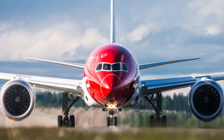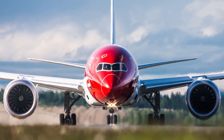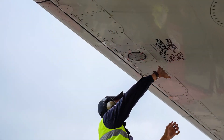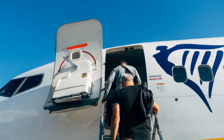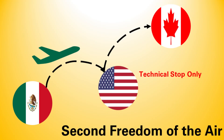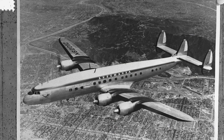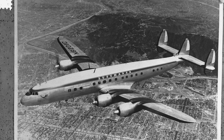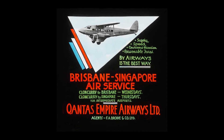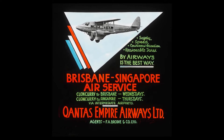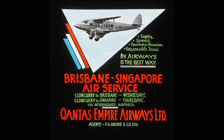The second freedom is the right to make a technical stop in the country. This can be a refuel or because of an emergency. The right does not allow for passengers and cargo to get on or off the plane. Going back to our example of the Mexican airline flying from Mexico City to Toronto, this right will allow the airline to refuel at any airport in the US. This second freedom was useful especially in the early days of aviation when the range of aircraft was limited. Long-haul flights usually included one or more refueling stops, and the second freedom ensured that airlines were allowed to do so.